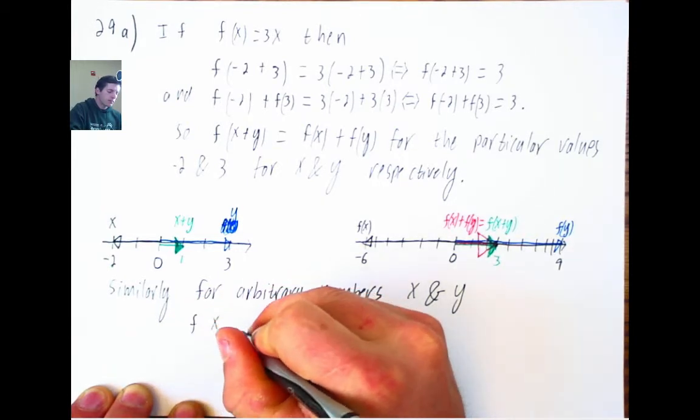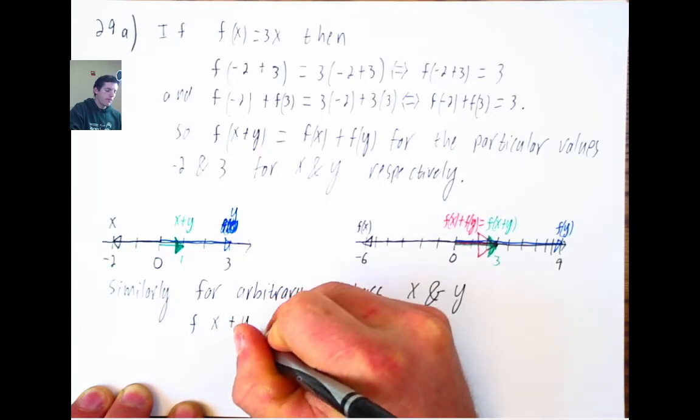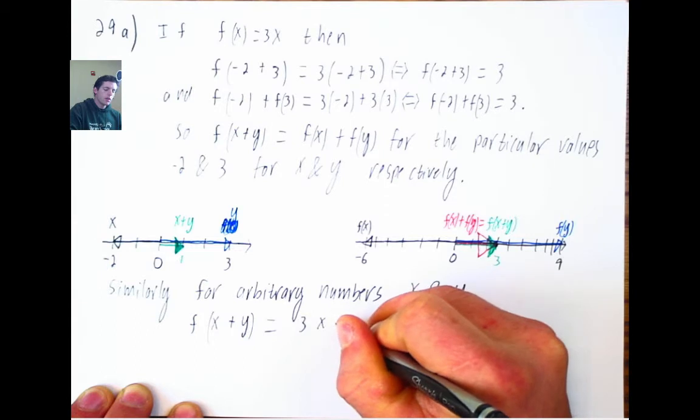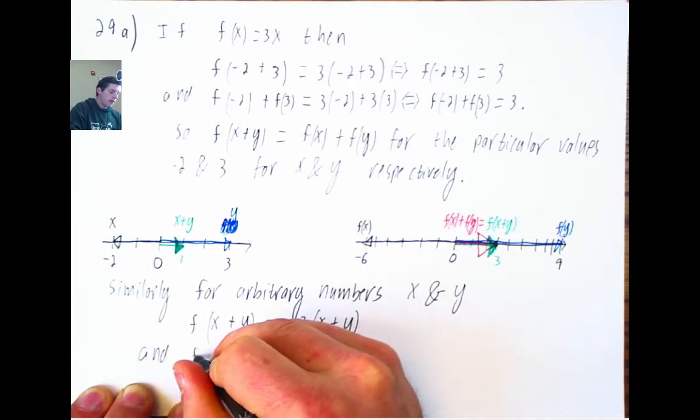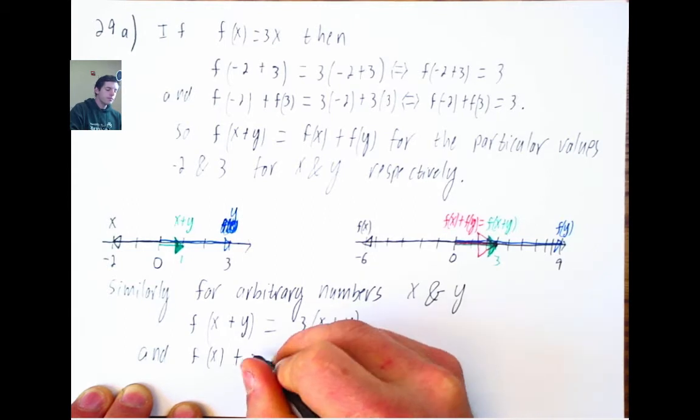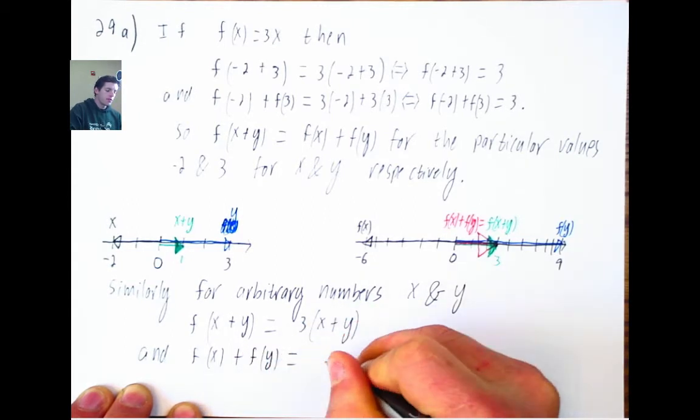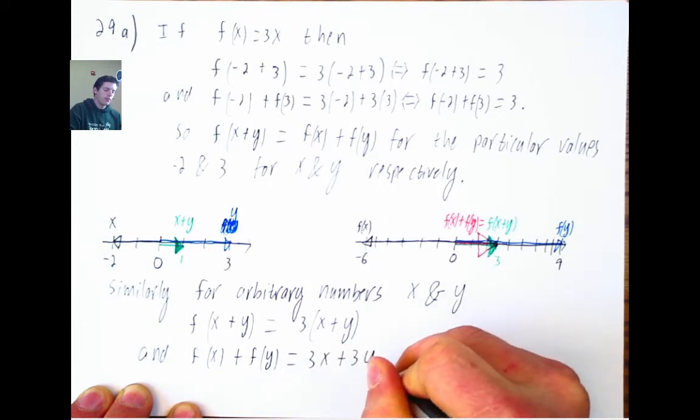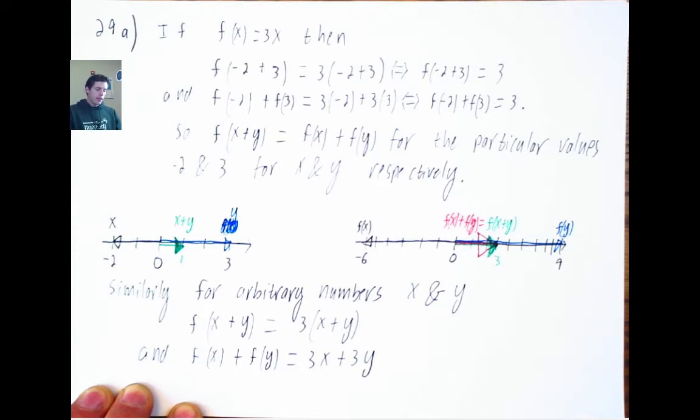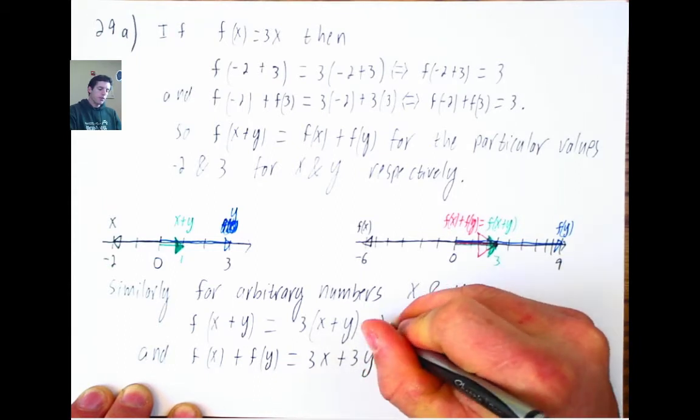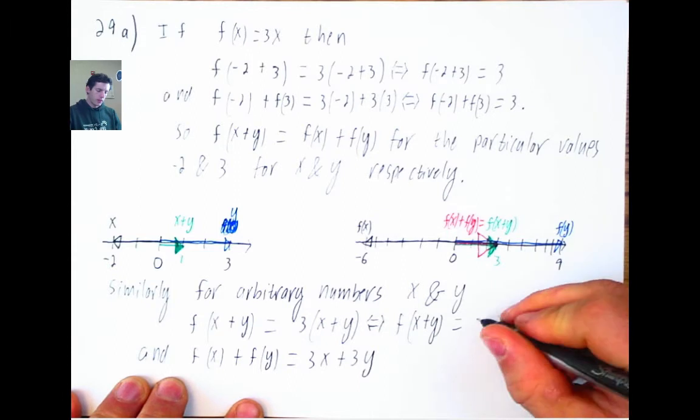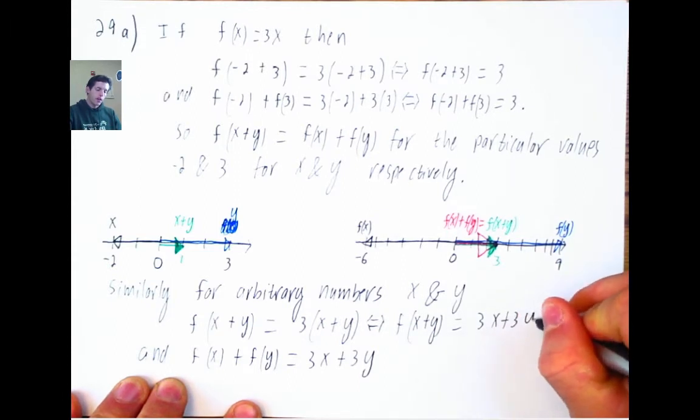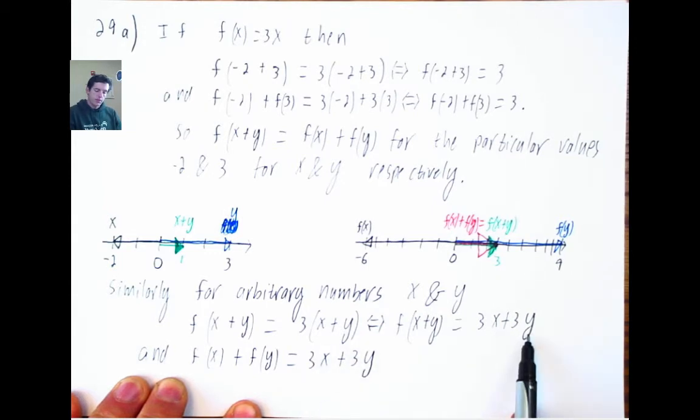F of x plus y is 3 times x plus y, the thing inside of the argument of the function. And f of x plus f of y is 3 times x plus 3 times y. Alright, then I can—I mean you can probably already see that these two things are equal, but just to drive the point home, we can say f of x plus y is—how would we like to express it? 3x plus 3y. All I've done there is distribute, and now I've got this to look exactly like that.